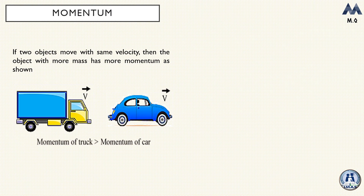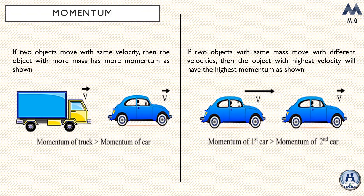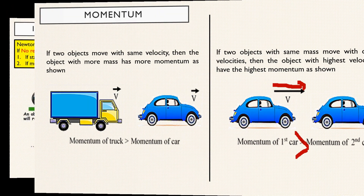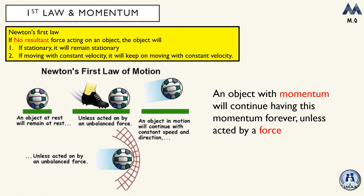Looking at this example, both the truck and the car have the same velocity, but the truck is more massive, so the momentum of the truck is greater than that of the car. In the second example, two cars have the same mass but the first car has a higher velocity, so it definitely has more momentum. Never forget the connection between Newton's first law and momentum.